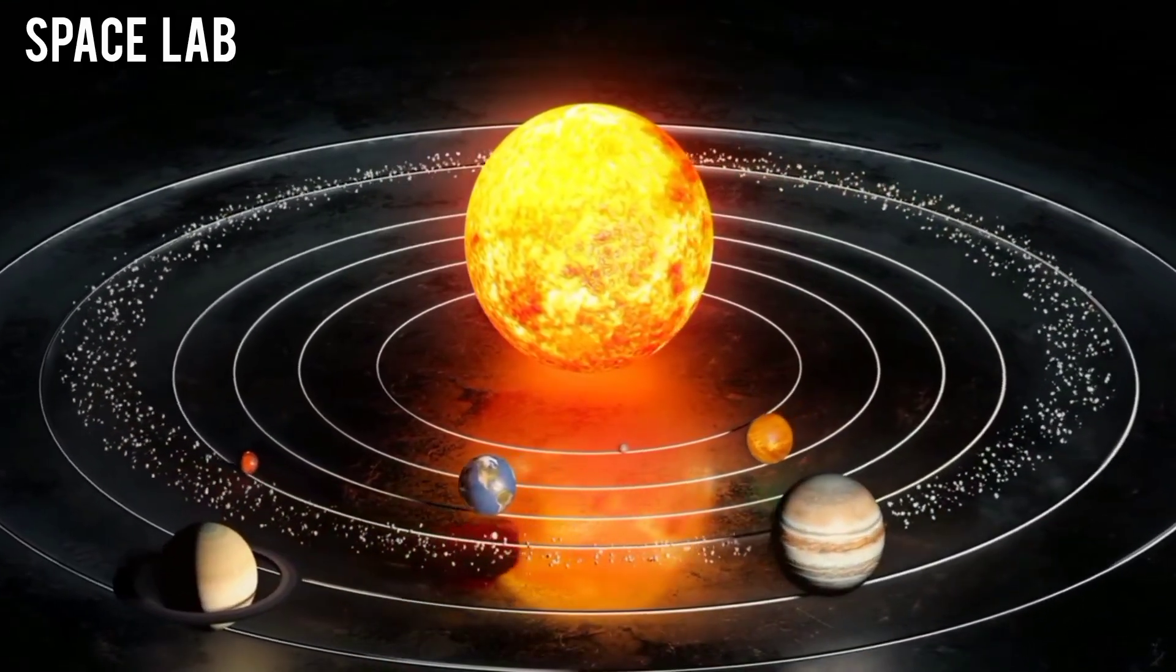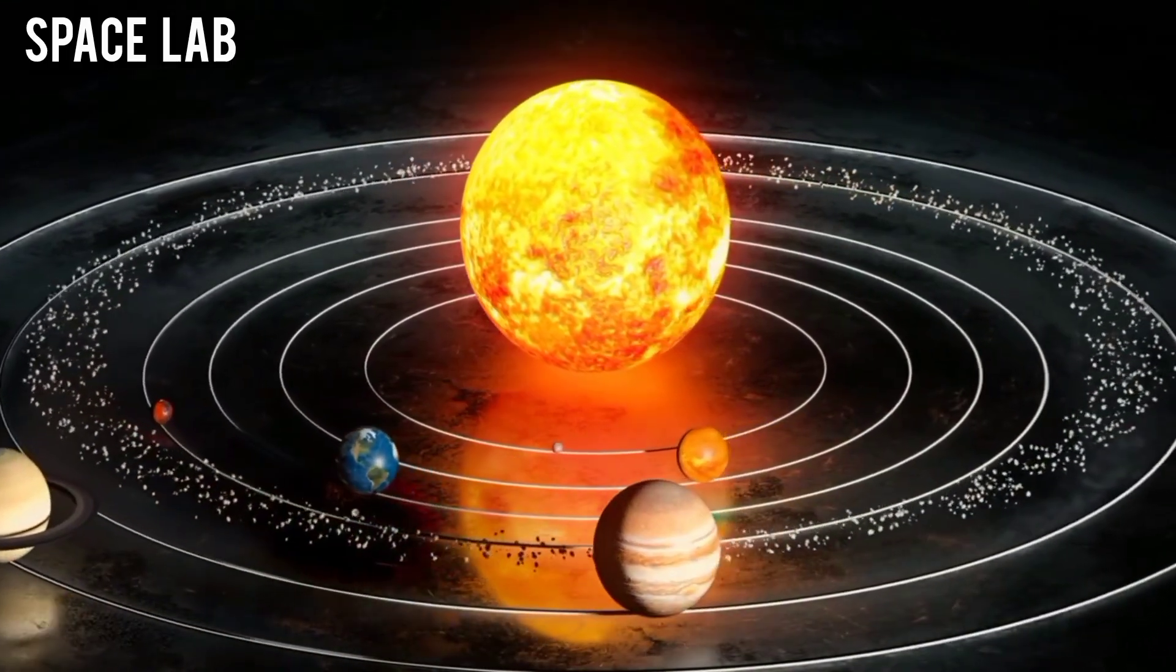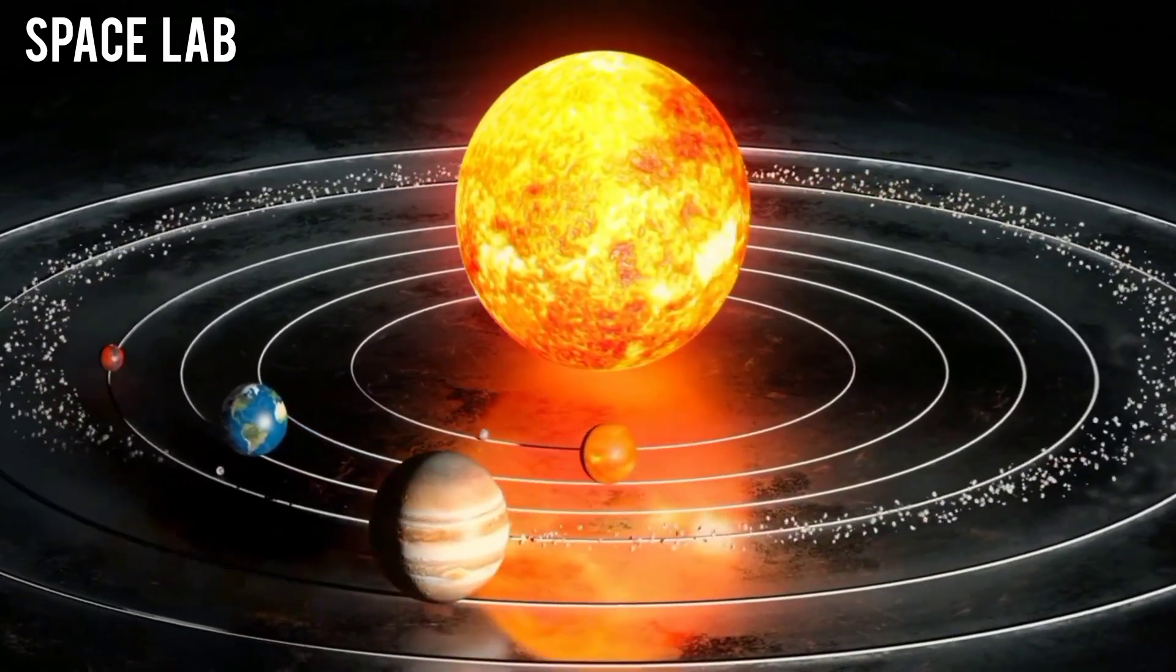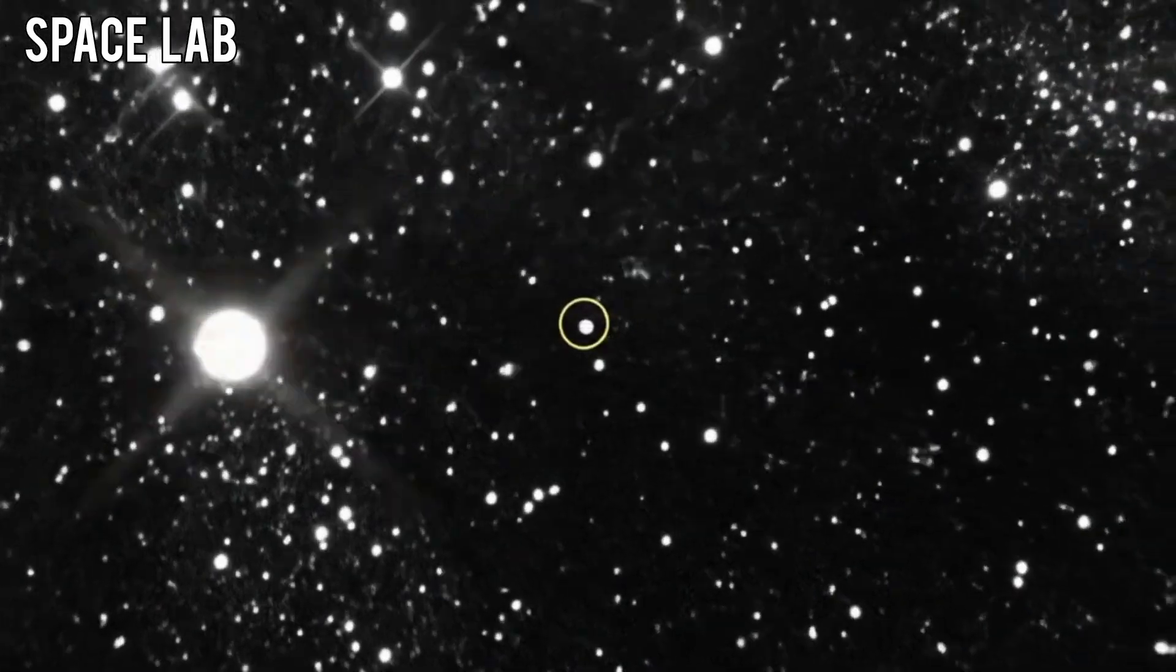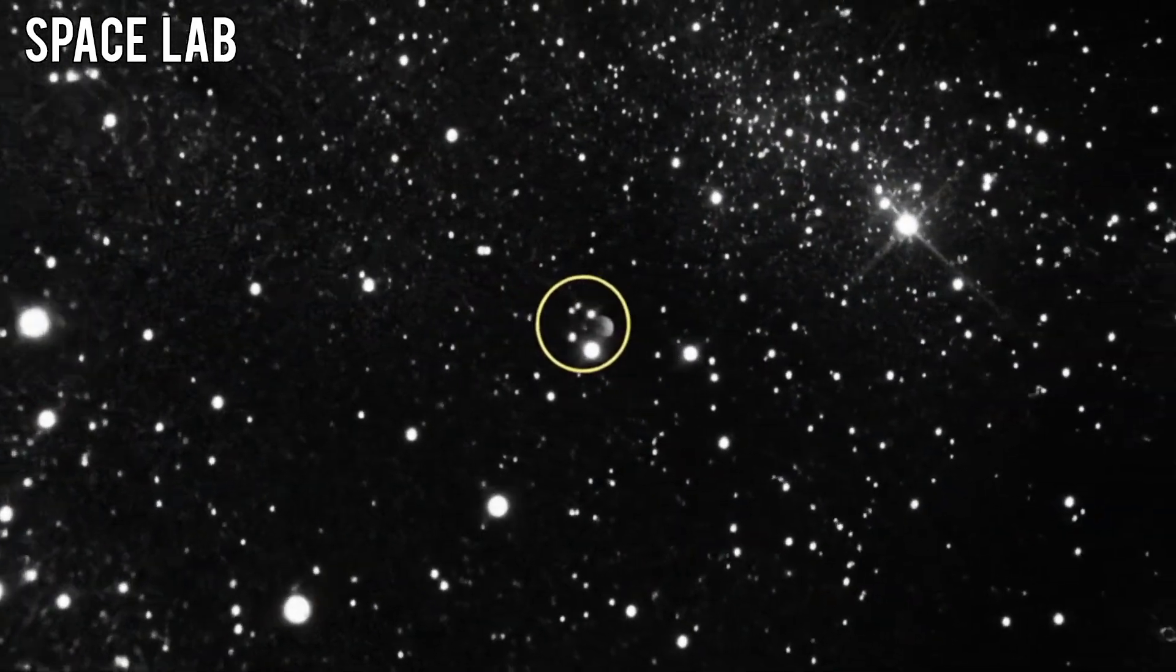At first, astronomers thought it was coincidence, until it happened again. Each time the Sun released a burst of plasma, 31a Tadlus responded, glowing brighter as if feeding off the energy.